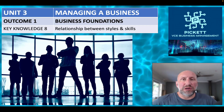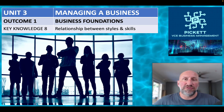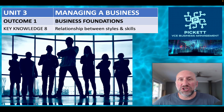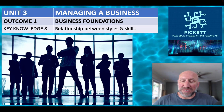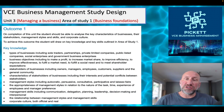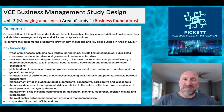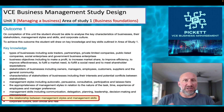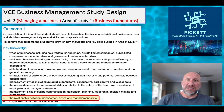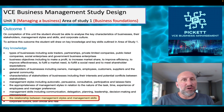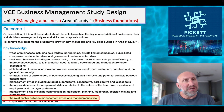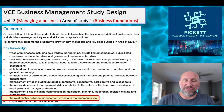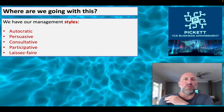Welcome back. We are looking at Key Knowledge 8 from Unit 3 Outcome 1, and this is all about the relationship between management styles and management skills, which were the last two topics we looked at. Here's our study design — you can see at the bottom there's not a lot of detail, very simply the relationship between those two things. This is our penultimate key knowledge dot point to cover, so we're nearly finished this outcome.